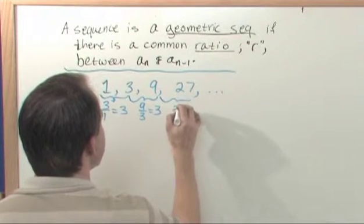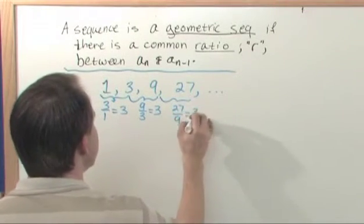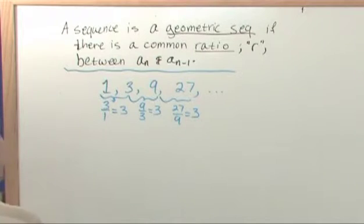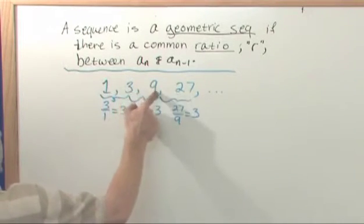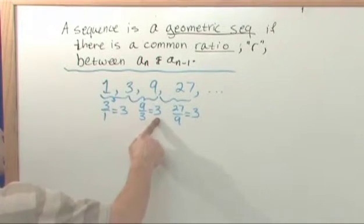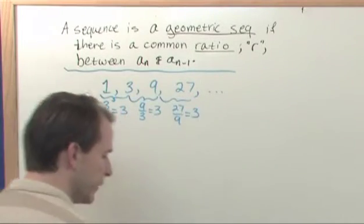And let's look at this. 27 divided by 9, that's also equal to 3. So you see, in each case, the ratio between one element and the one before it is equal to 3. So it's called a geometric sequence.